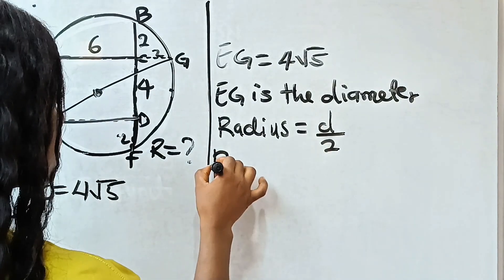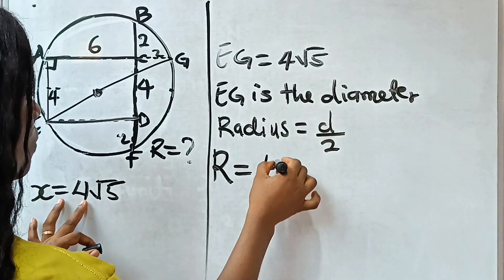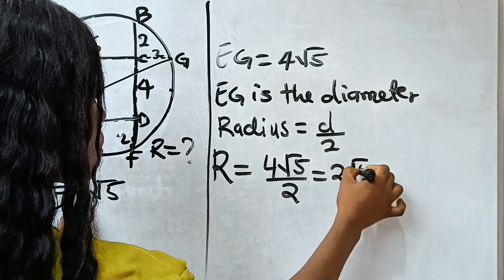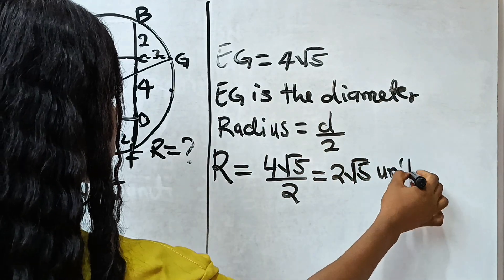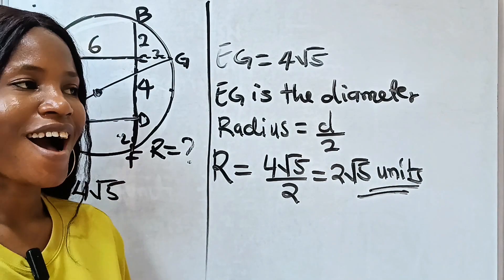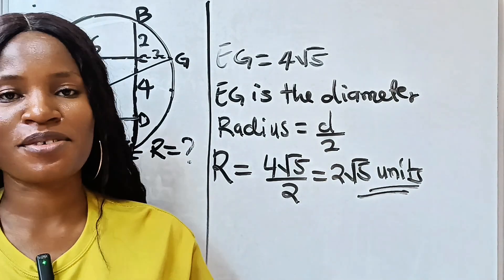So it simply means that our radius is 4 root 5 divided by 2, which will give us 2 root 5 units. And that is our answer. Thank you for watching and I wish to see you in my next video. Bye.